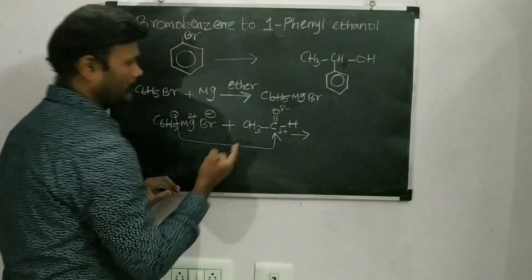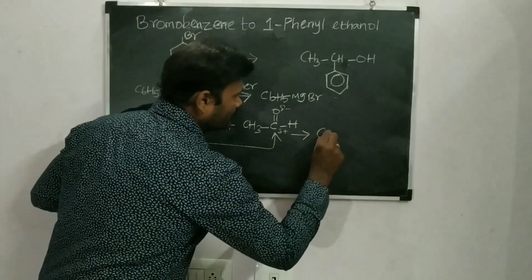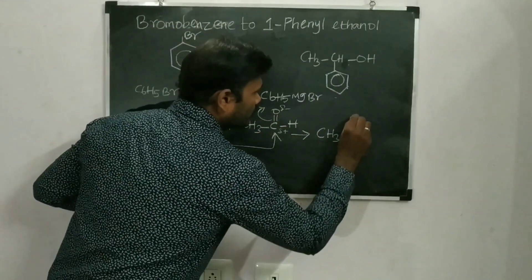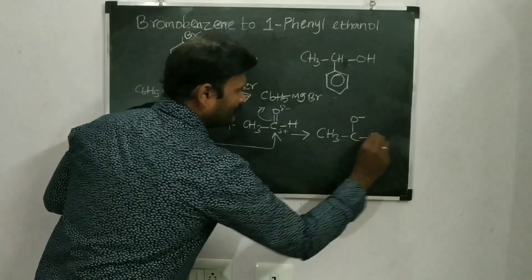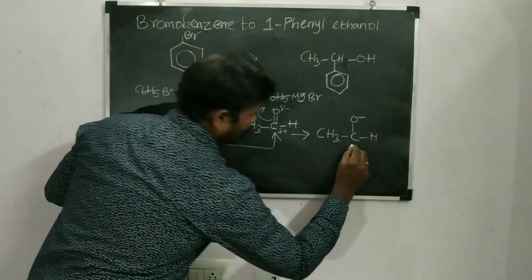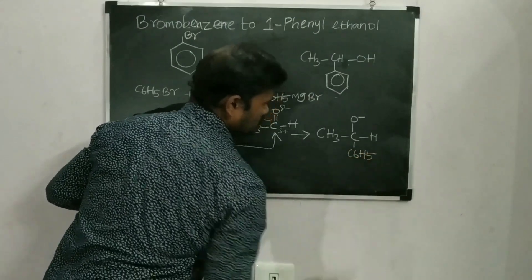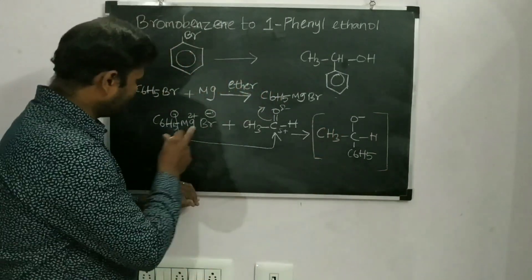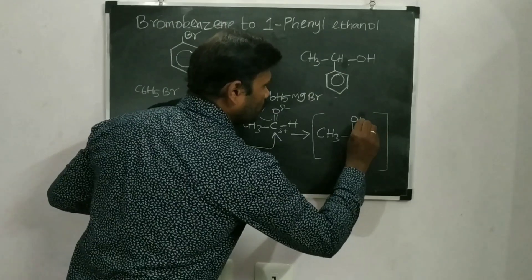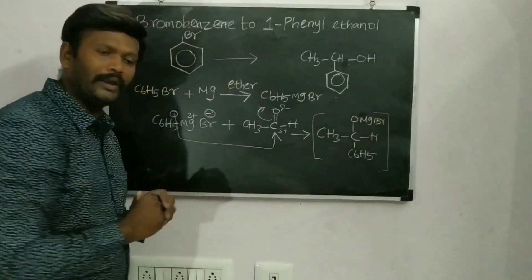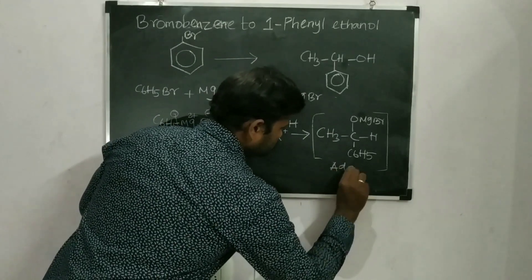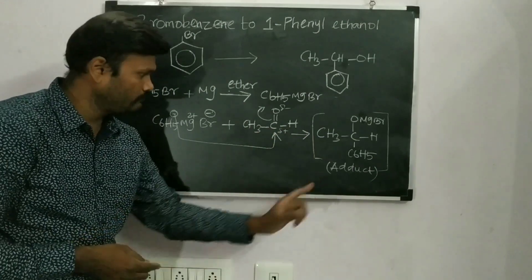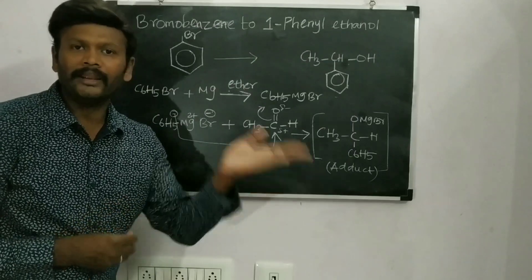So I would like to write the product. C6H5 attacks the carbonyl carbon of acetaldehyde — the product formed has O minus, one hydrogen, and the incoming C6H5 group attached to the carbon, along with CH3. And MgBr is also there. This is what I will be getting — an adduct. Whenever the Grignard reagent forms an adduct, I have to hydrolyze that adduct to get the final product.